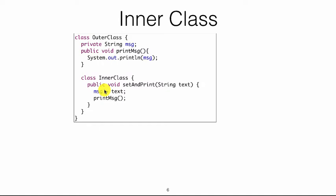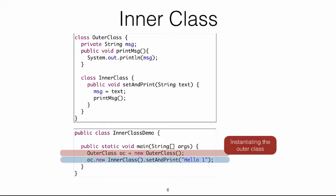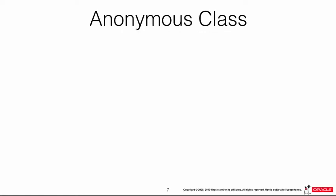To instantiate them: first create an instance of the outer class with OuterClass oc = new OuterClass(). Then use oc.new InnerClass() to create an instance of the inner class. You can then call dot setAndPrint and pass 'hello'. If you run this you will see 'hello' being printed. This first line instantiates the outer class and the second instantiates the inner class.